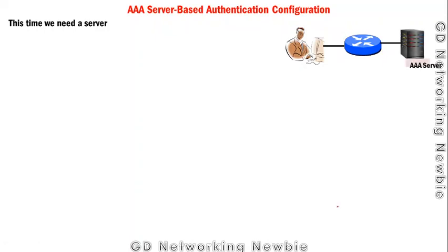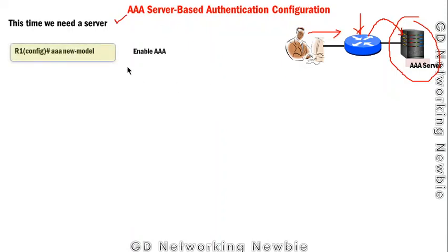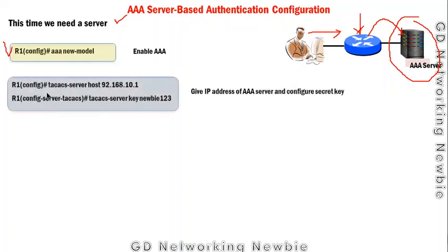Now for server-based AAA authentication, we need a dedicated AAA server. Previously the router checked credentials locally, but now it will send authentication requests to the AAA server. We still need to enable AAA with `aaa new-model`, and then inform the router about the server it should contact.